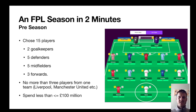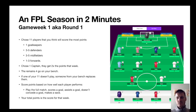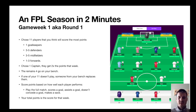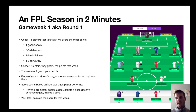Here's an example of a squad with prices shown — this is essentially what you're trying to create to get the best points each week. Each week you choose the 11 players you think will score the most points out of your 15, selecting a formation of one goalkeeper, three to five defenders, three to five midfielders, and one to three forwards. You also choose a captain who gets double points, and the remaining four players go on your bench to replace any of your 11 who don't score. Your total score is the sum of individual points from all players that week.